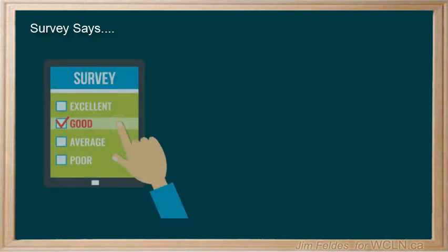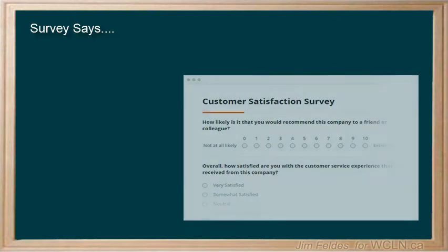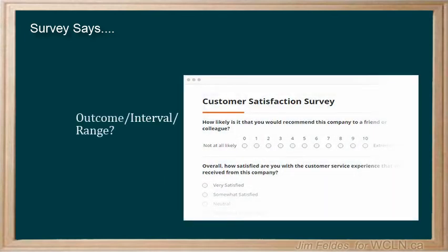Let's consider a scenario where we might use this. You've surely experienced the endless survey requests that we are bombarded with every time we buy or do something. Everyone wants feedback on your experience. So if you do an online satisfaction survey from 0 to 10, what are the possible outcomes? And will the data be discrete or continuous?